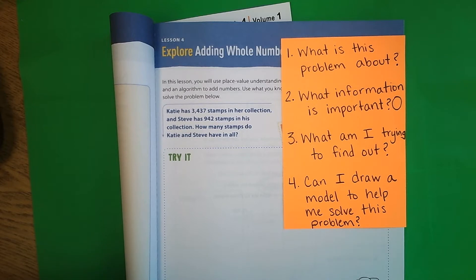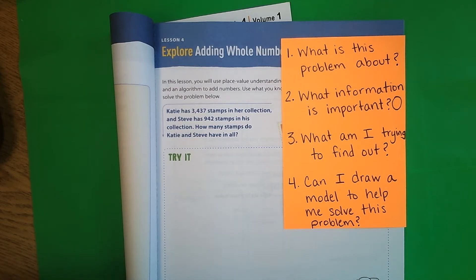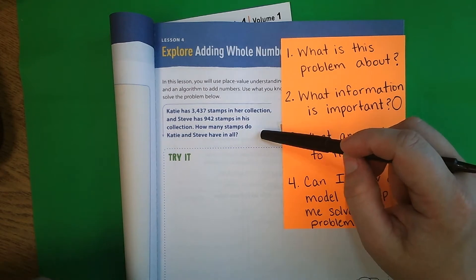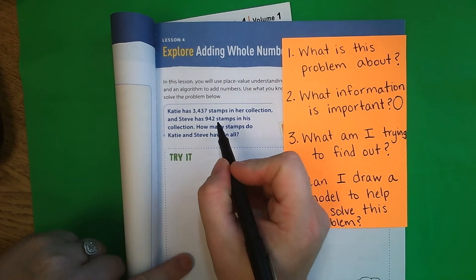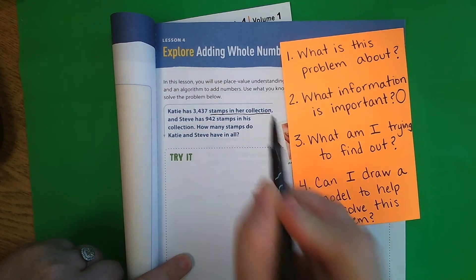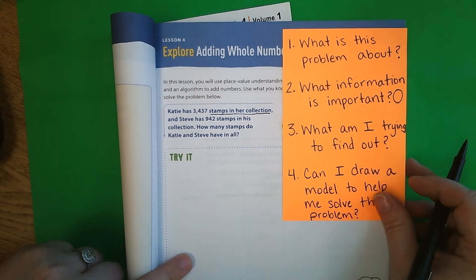On page 49: Katie has 3,437 stamps in her collection, and Steve has 942 stamps in his collection. How many stamps do Katie and Steve have in all? Our first question is: what is this problem about? Well, we are talking about the amount of stamps that Katie and Steve have in their collection.